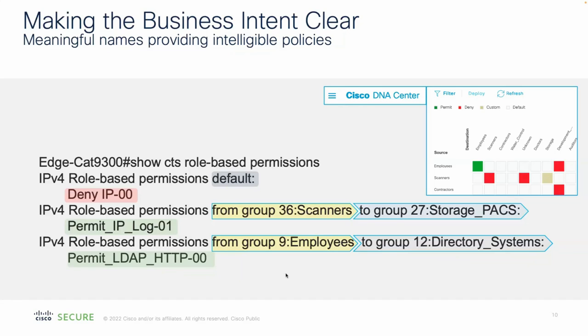In Cisco DNA Center there's a nice, simple matrix where the source group is down the left side and the destination is across the top, and it's the intersection that does the magic. You tell it whether to permit traffic, deny traffic, or only permit certain layer-four ports. You can add your groups with meaningful names — scanners, storage, employees, directory systems — whatever SGTs you want, named appropriately for your network.